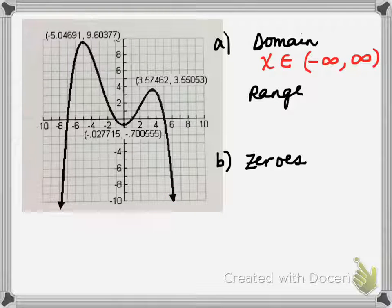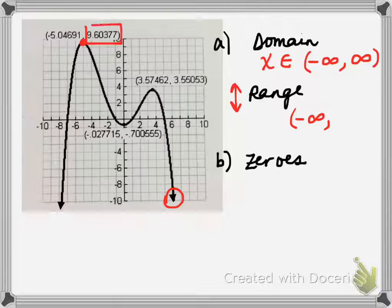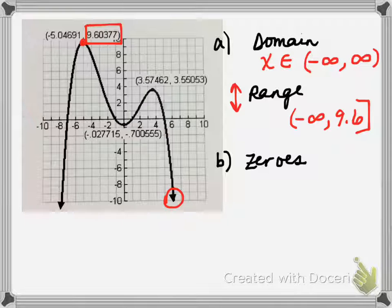Likewise for range, we're looking at the lowest to the highest point on the graph — all of the possible y values. These arrows indicate that the graph is going down forever, so that would be negative infinity. The highest point on the graph has a y value of about 9.6. So we'll say from negative infinity to 9.6. This point is included on the graph — the graph touches at that y value of 9.6 — so we'll utilize a bracket to include the value. You could also write y as an element of that interval.